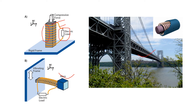In a bridge application, loading conditions always change frequently. Because of the change in load, there is a change in stress and strain on the material. If we apply magnetostrictive material on the bridge and wrap a coil around it, the change in magnetic flux will generate electrical energy. This is the example of a magnetostrictive material used in a cantilever beam configuration on a bridge.